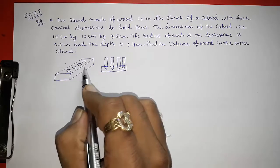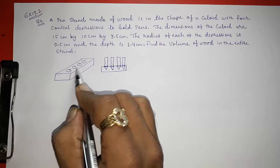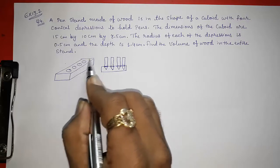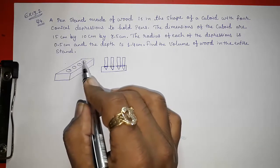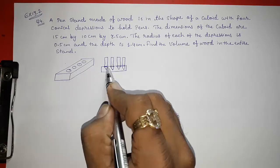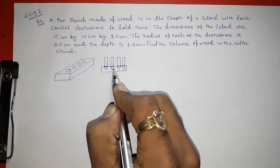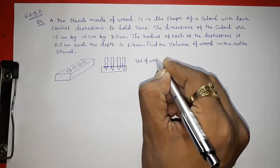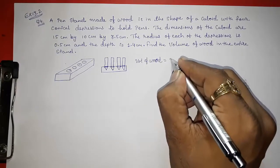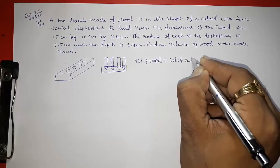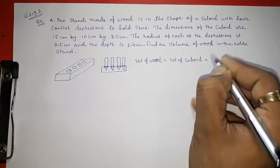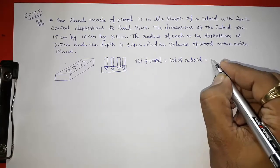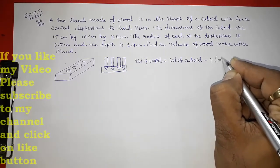Look here, they had given us a figure of a pen stand and holes are there and cones are there. What we are going to do? First, we are going to find the volume of this whole wood that is cuboid and then we are going to subtract these holes that are in the form of cone. So volume of wood will be equal to volume of cuboid minus 4 into volume of cone because that we had cut out from it.